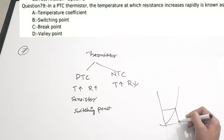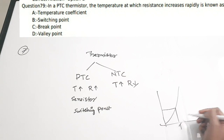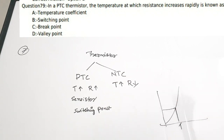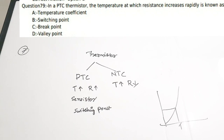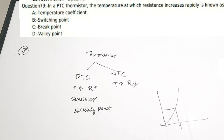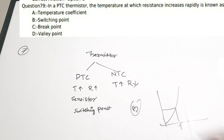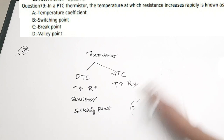At a particular temperature point on the PTC characteristic curve, the resistance increases rapidly — that specific point is called the switching point. Correct answer is option B.